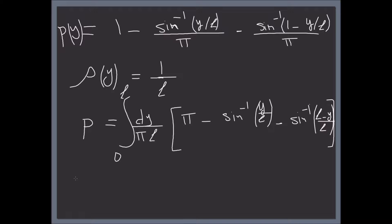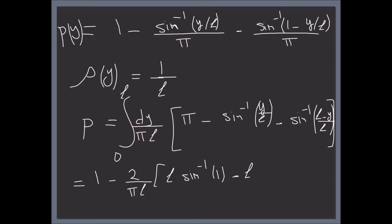Doing the integral, we get 1 minus 2/(π·L) times L·arcsin(1) minus L, which equals 1 minus 1 plus 2/π, and that equals 2/π.